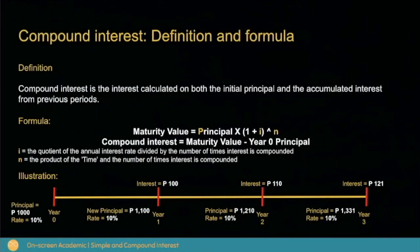Now let's talk about compound interest. Compound interest is the interest calculated on both the initial principal and the accumulated interest from previous periods. The formula using compound interest is the maturity value — the amount that you will pay or receive at the end of the contract — and it is equal to principal times 1 plus i, raised to n.